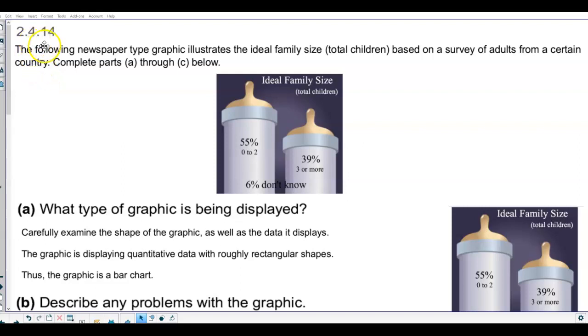Section 2.4.14. The following newspaper type graphic illustrates the ideal family size, total children, based on a survey of adults from a certain country. We're going to complete parts A through C below.